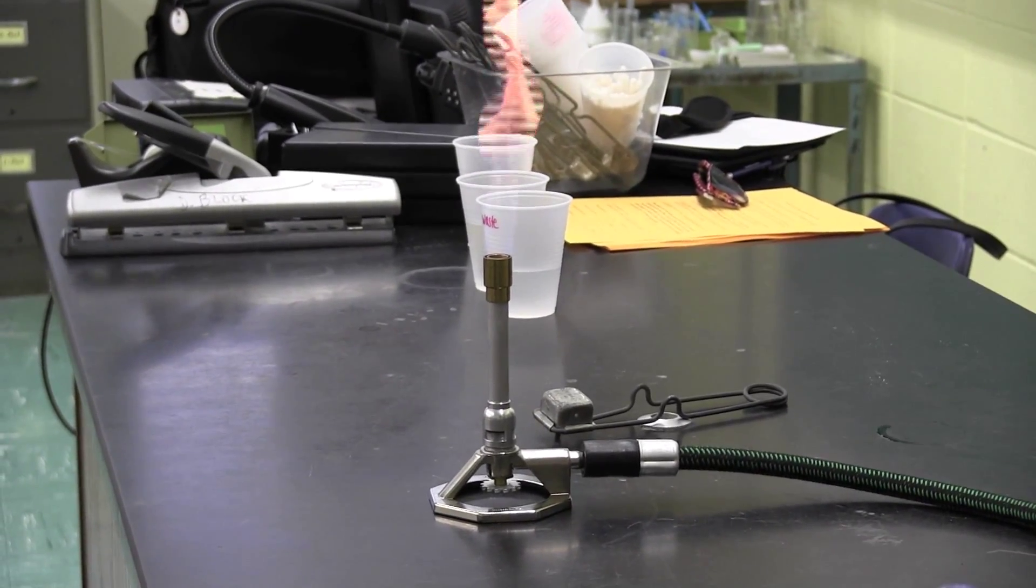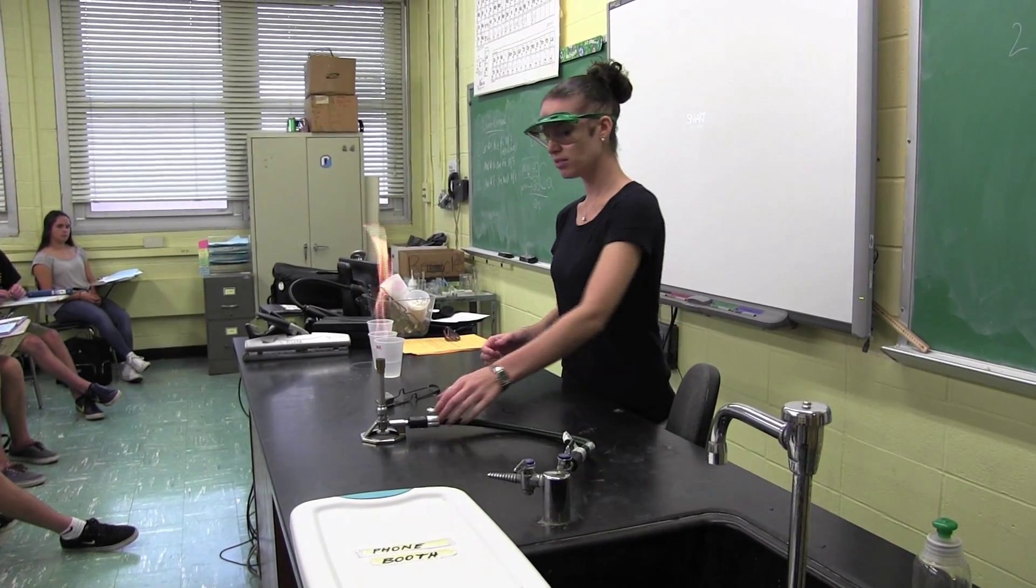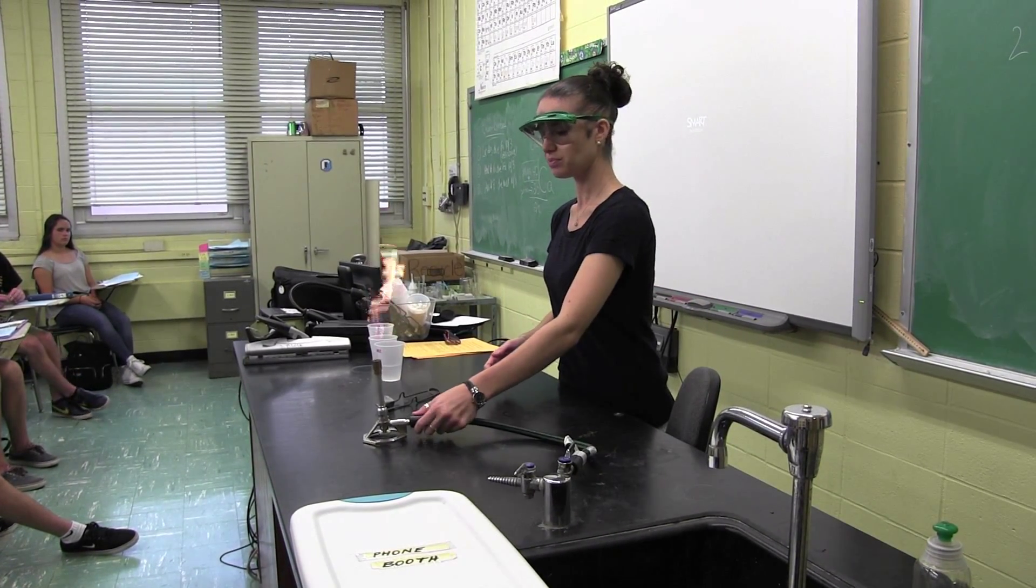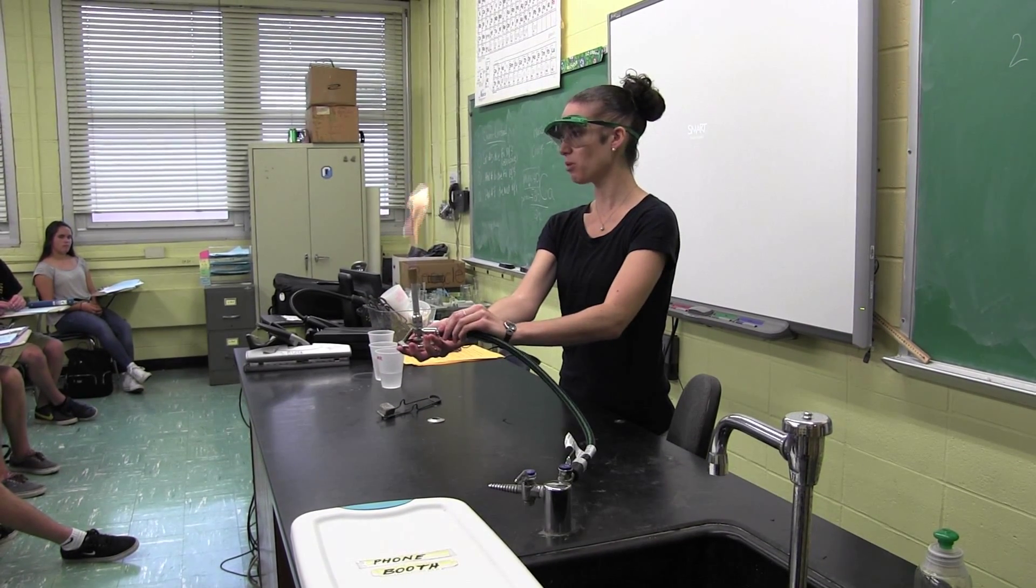Now, this is not the flame that we want. So, there are two nozzles where you can adjust different things on a Bunsen burner. Okay, and you can hold, by the way, the base part, the bottom, or this part, it won't get hot.